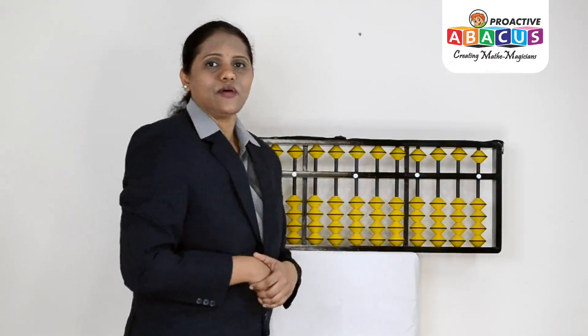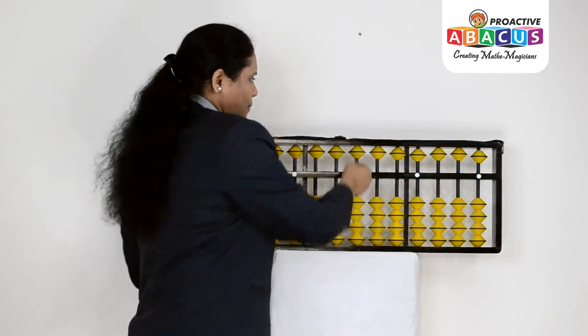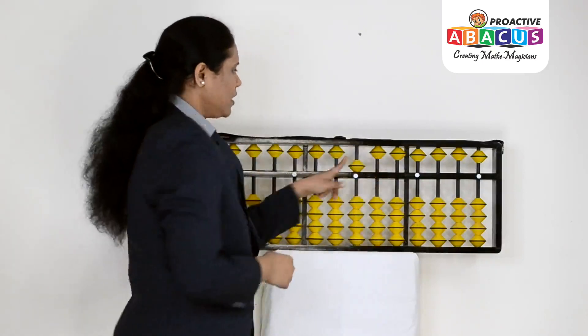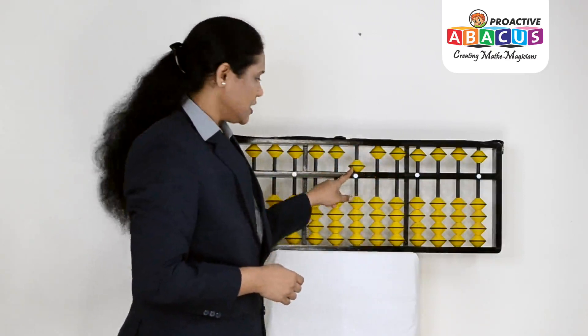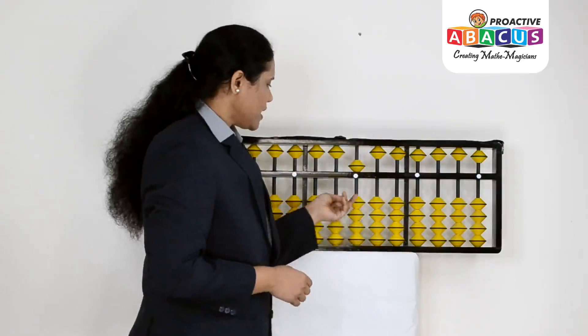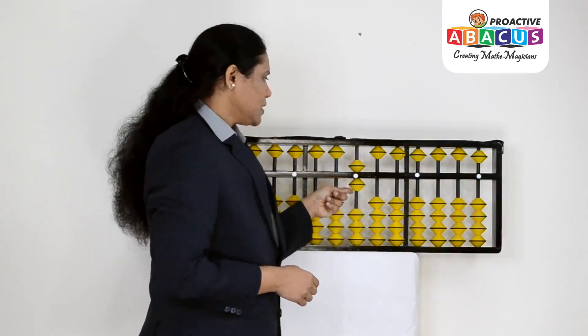In the 6th level, we have our upper deck and lower deck. The upper deck is 5, the upper deck is always 5. The lower deck, we have 1 bead touching the horizontal bar. This is 6.